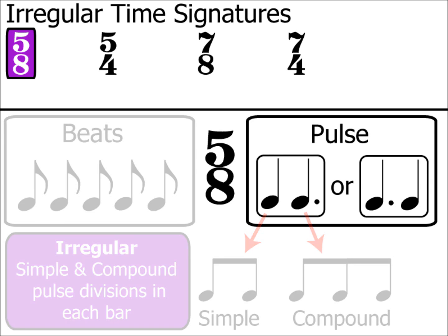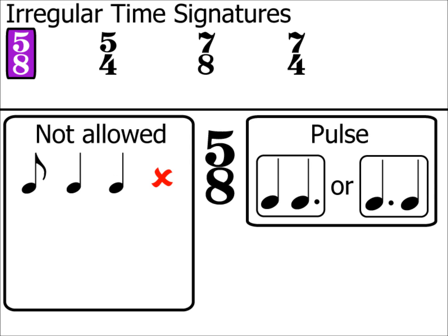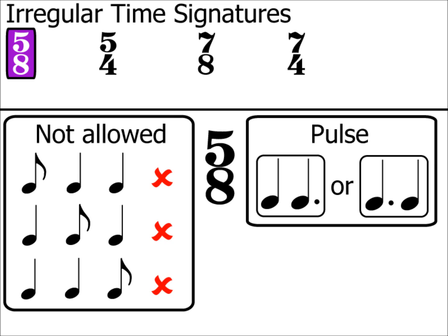Staying with 5/8 for the moment, it's important to note that the pulse is either crotchet then dotted crotchet, or the other way around. It can never be quaver, crotchet, crotchet, or any other combination of these notes, even though each of those examples equals 5 quavers per bar. Even in irregular time signatures, there will always be a pulse, and each pulse must split into a combination of 2s and 3s. The lone quaver is not allowed as a result.